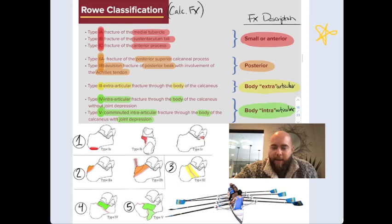So 1a is the medial process of the calcaneus. 1b is the sustentaculum tali. And c is the anterior process of the calcaneus. So those are the smalls, number one. Number two, those are the posteriors.